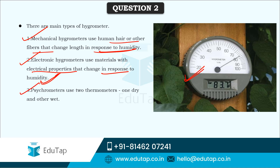Psychrometers use two thermometers — one dry and one wet — and based on that, meteorologists determine the humidity range in the atmosphere.